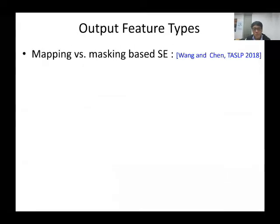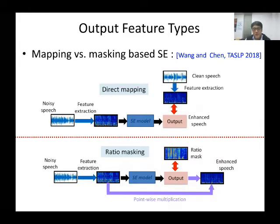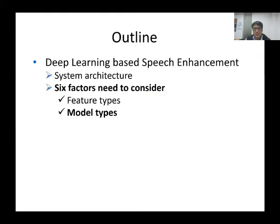In addition to the input, there are different types of output. Generally, we can divide them into two categories. The first is direct mapping, where the output is spectral features or waveforms. The second is ratio masking, where the output of the speech enhancement model is a mask, and a point-wise multiplication is carried out to obtain the enhanced speech spectral features.